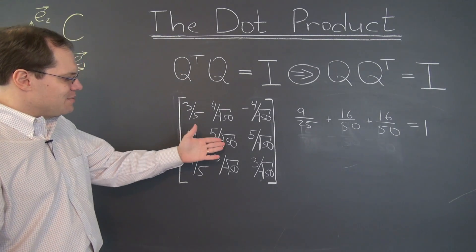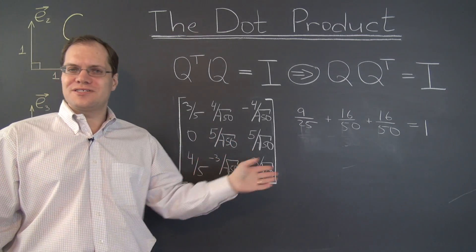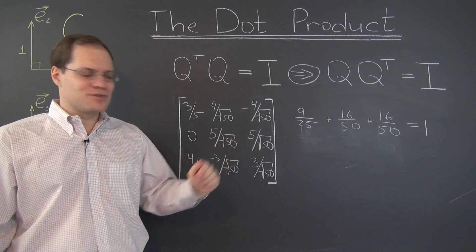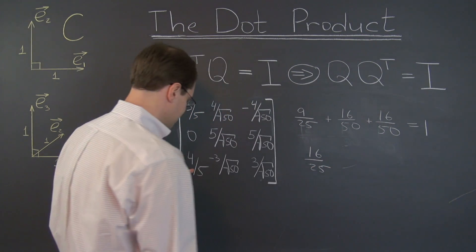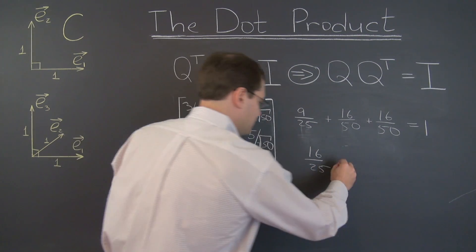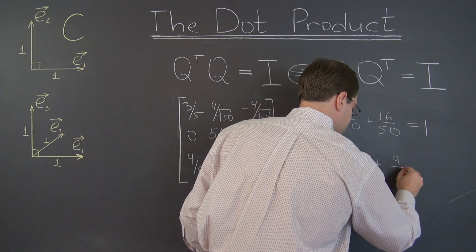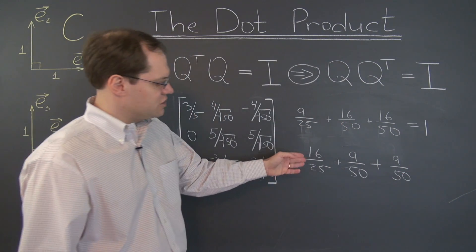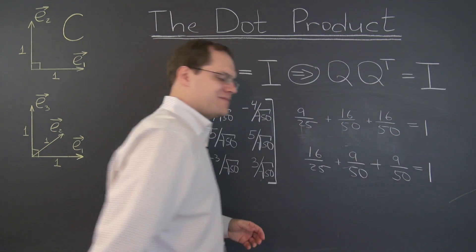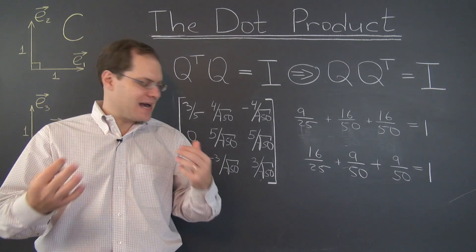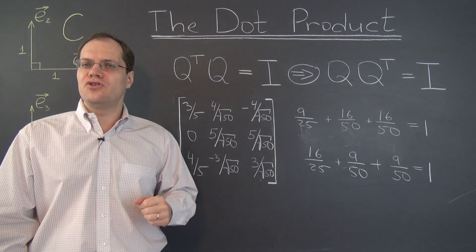The second row: twenty-five-fiftieth plus twenty-five-fiftieth — that's one. The last row: sixteen twenty-fifths plus sixteen twenty-fifths plus nine-fiftieth plus nine-fiftieth gives thirty-two plus eighteen over fifty — fifty over fifty equals one. Here is the magic: if the columns are orthonormal, then the rows are orthonormal as well.